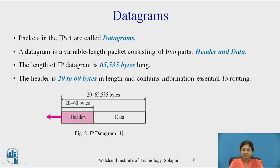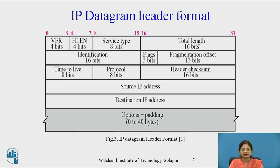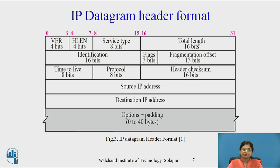Now let's see the header fields in detail. The IP datagram header contains various fields: VER (version) which uses 4 bits; header length (H-length); service type; total length; identification; flags (3 bits); fragmentation offset (13 bits); time to live; protocol; header checksum; source IP address; destination IP address; and an optional field: option plus padding.